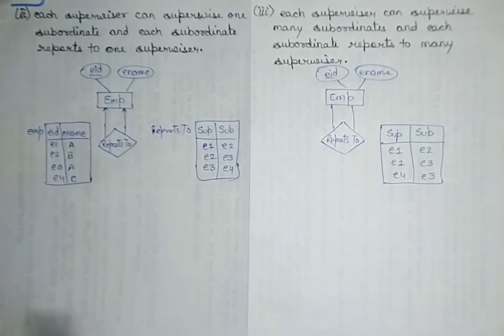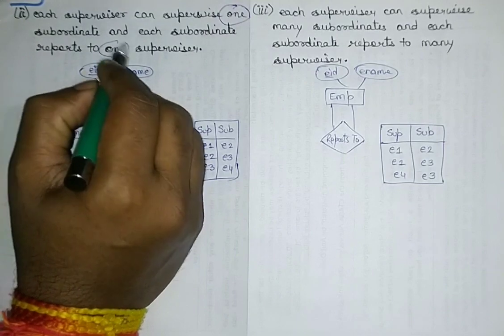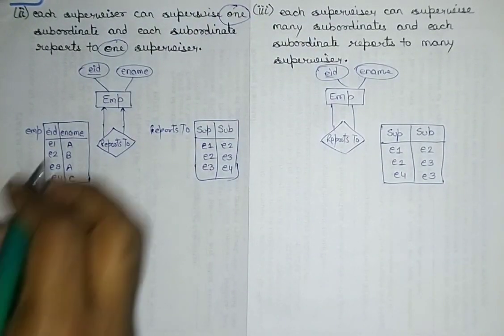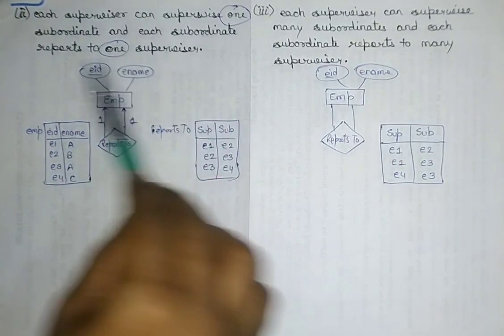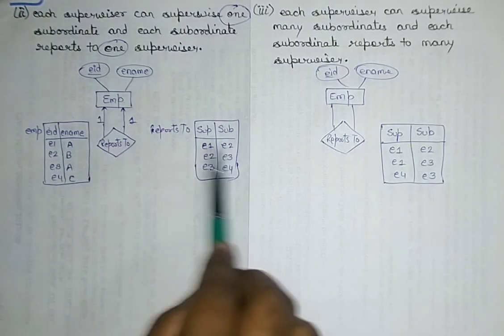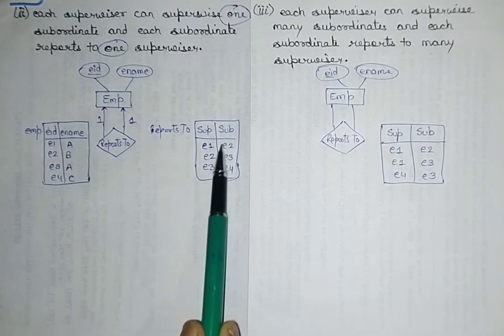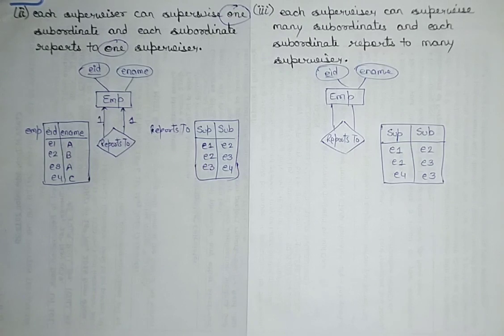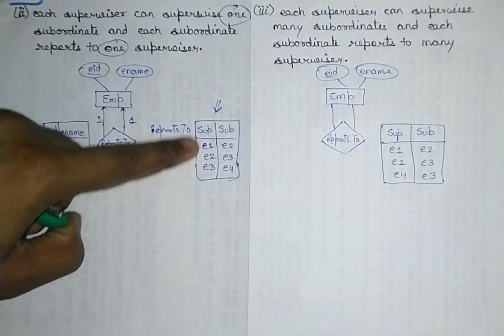In the second case: each supervisor can supervise one subordinate, and each subordinate reports to one supervisor. This is clearly a one-to-one relationship. In the 'reports to' table, E1 is supervising E2, E2 is supervising E3, and E3 is supervising E4. Each subordinate reports to only one supervisor: E2 reports to E1, E3 reports to E2, and E4 reports to E3.